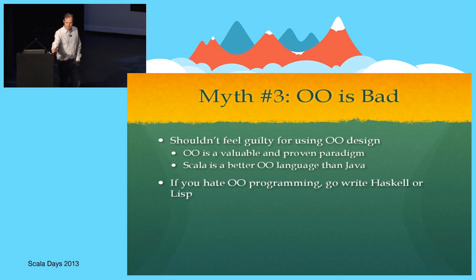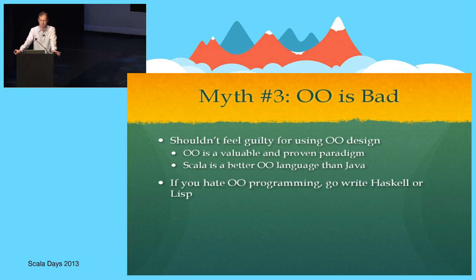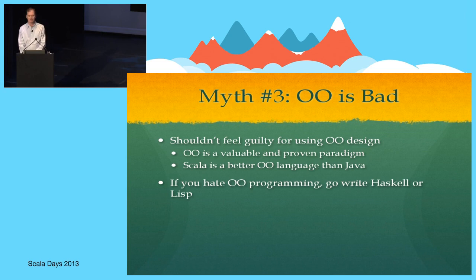Another myth that seems popular in the community is that object-oriented programming is bad. Personally, I believe — and I think Martin is quite clear on this — that Scala is an elegant blend of object-oriented and functional programming. It's for people who want to do both. If people don't like object-oriented programming and think it has no value, I don't think that's an argument based on evidence. There is plenty of evidence that object-oriented modeling has value. But frankly, if you don't like object-orientation, Scala is not the language for you — languages exist for purely functional code, and they are not Scala.